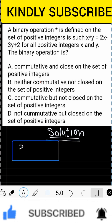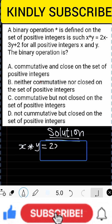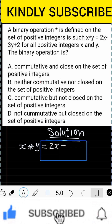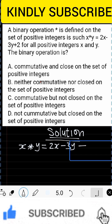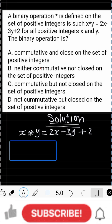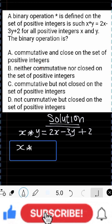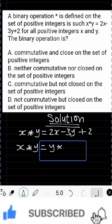Let's write the rule of combination: x★y = 2x − 3y + 2. For commutativity, the condition is that x★y must equal y★x.